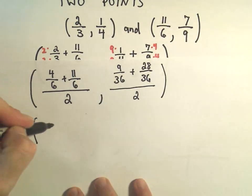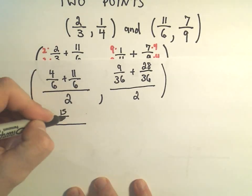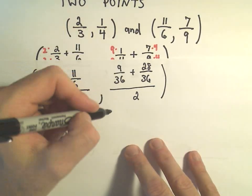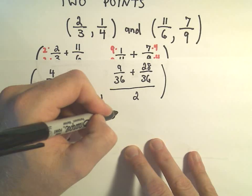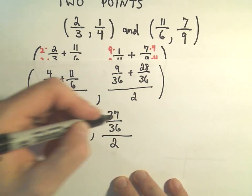Let's see, so if we do the arithmetic, 4/6 plus 11 sixths would be 15 over 6, again all divided by 2. 9 plus 28, that would be, I believe, 37 over 36, again all divided by 2.